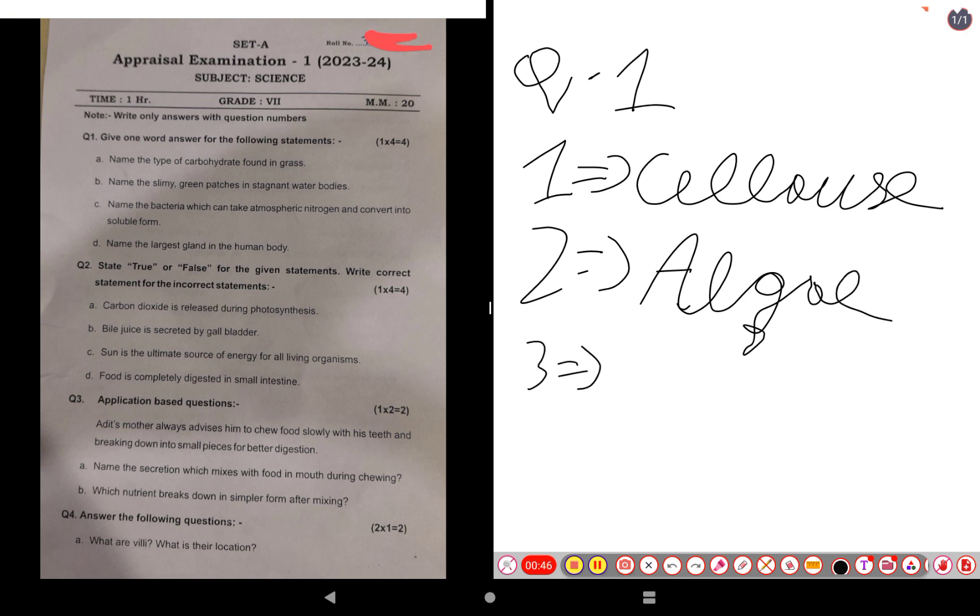Third one: name the bacteria which can take atmospheric nitrogen and convert it into soluble form. The bacteria which can take atmospheric nitrogen and convert it into soluble form is rhizobium, R-H-I-Z-O-B-I-U-M.